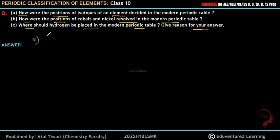What is an isotope? An isotope has the same atomic number but a different atomic mass. The atomic number is the same, but the mass is different. For hydrogen, the atomic number is 1, but the atomic mass is different — it can be 1, 2, or 3.